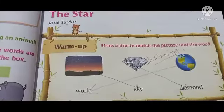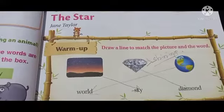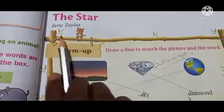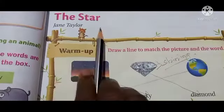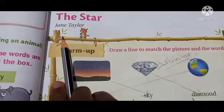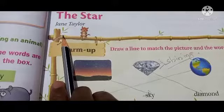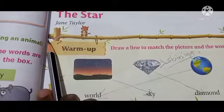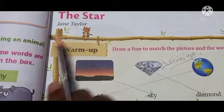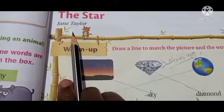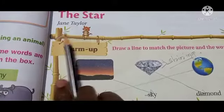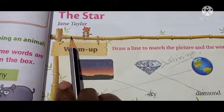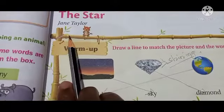Open page number 25. The Star — the poet's name is Jane Taylor. Who wrote this poem? Jane Taylor. This is a famous children's poem.